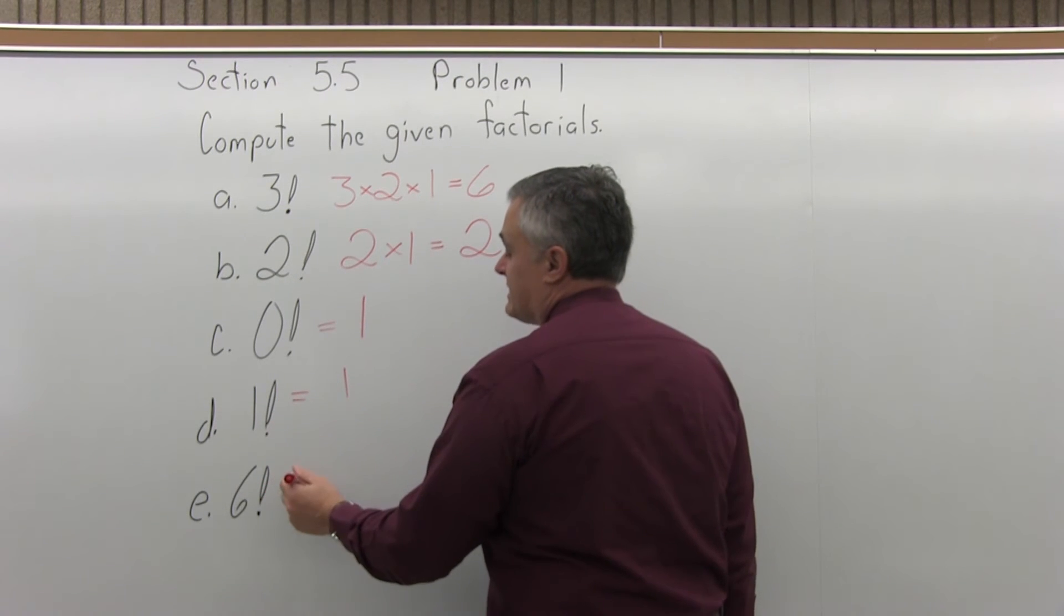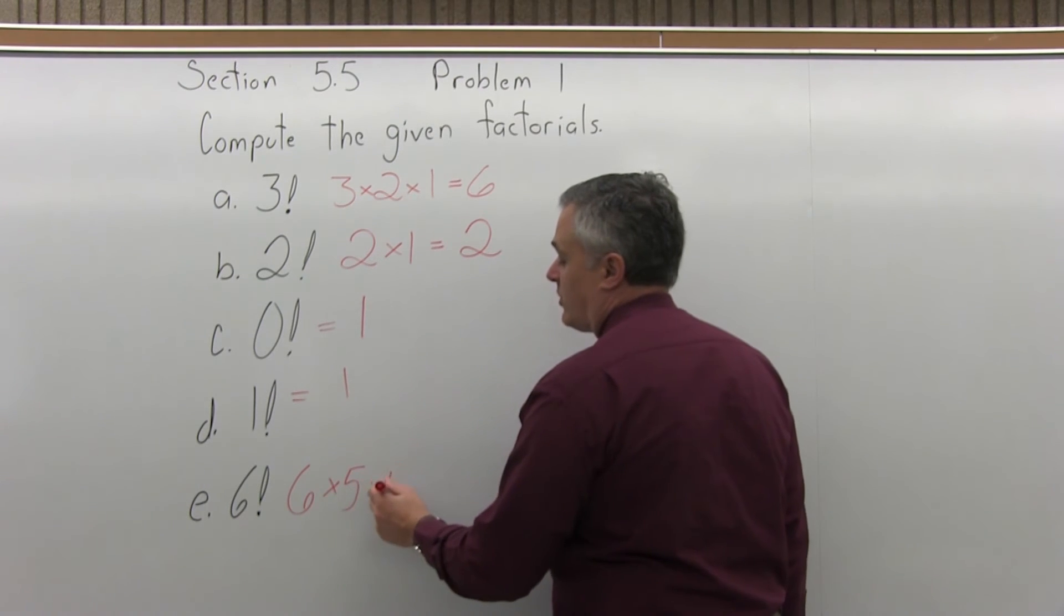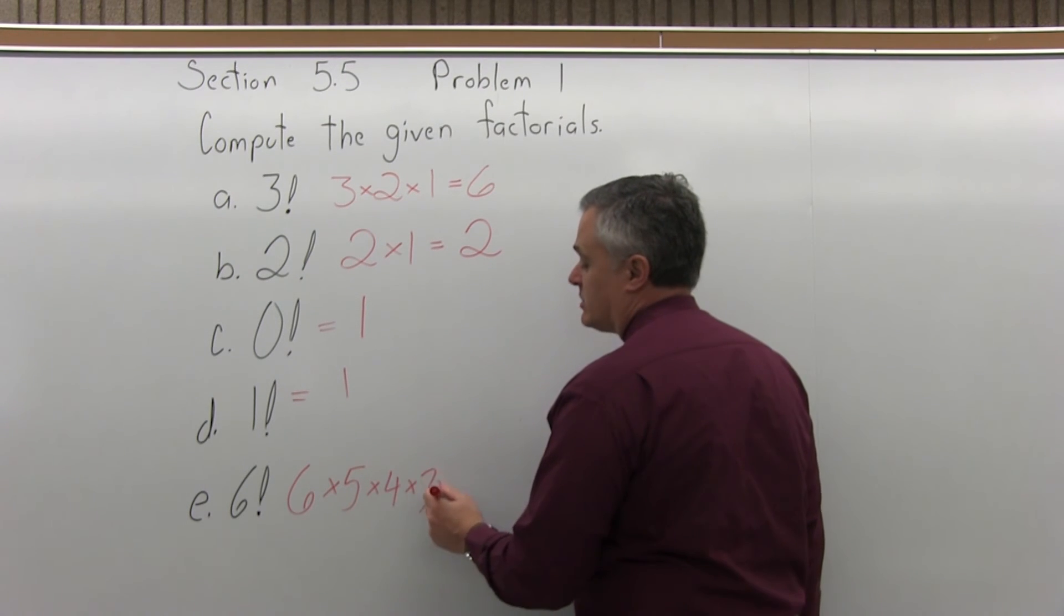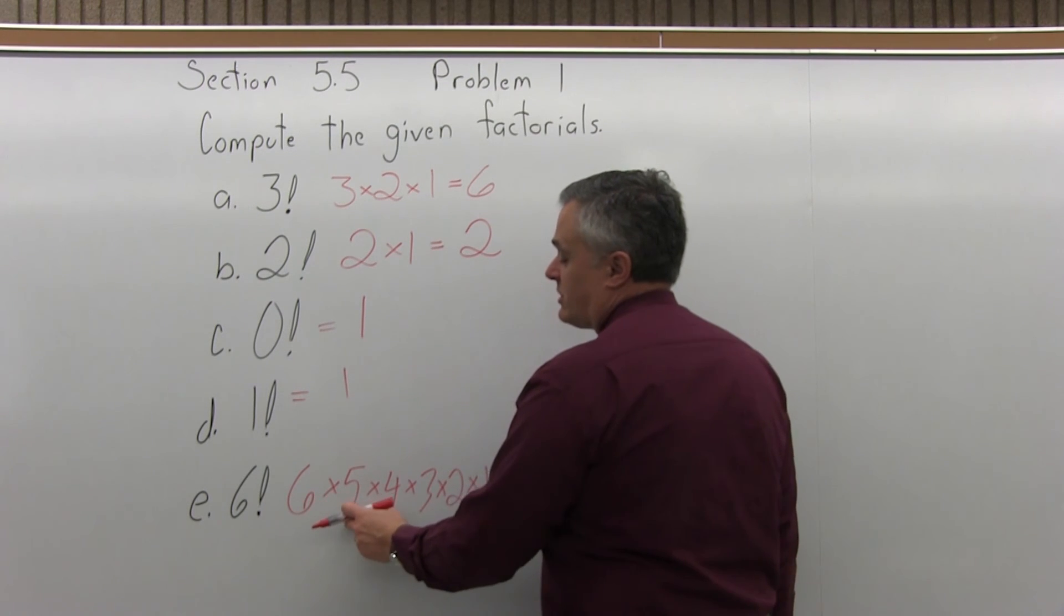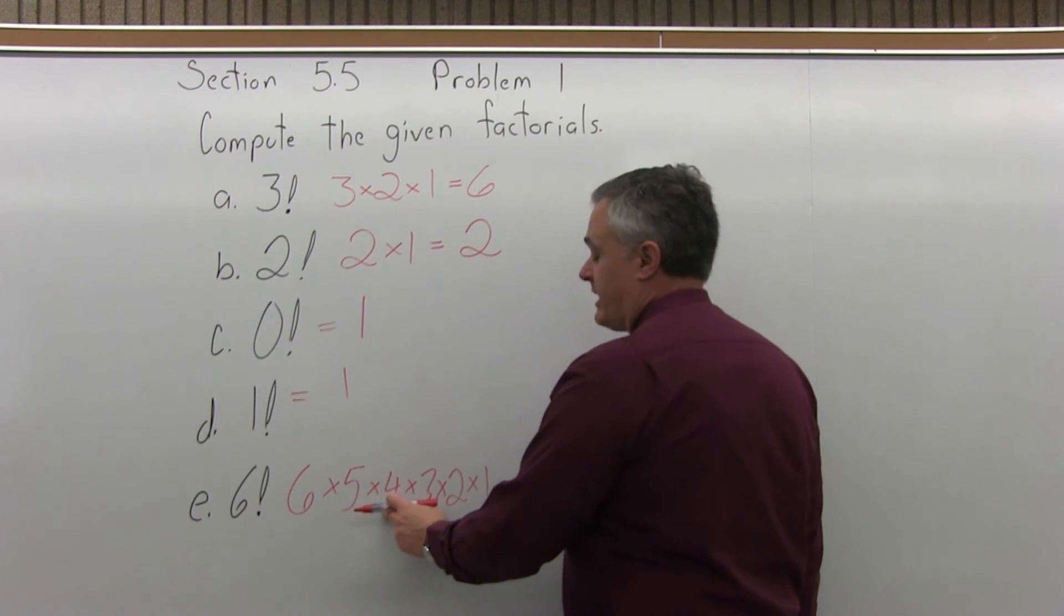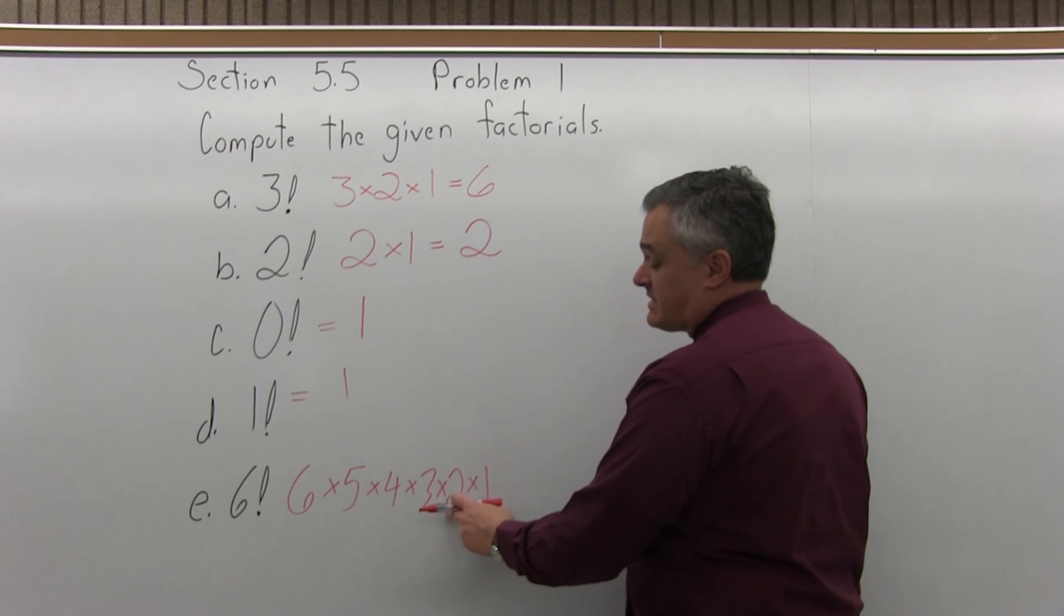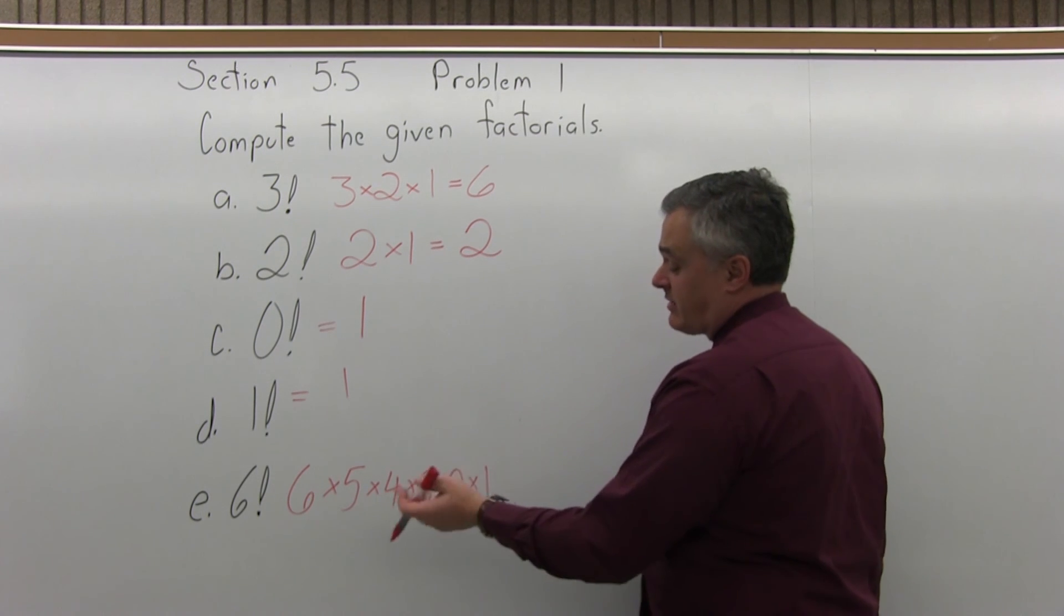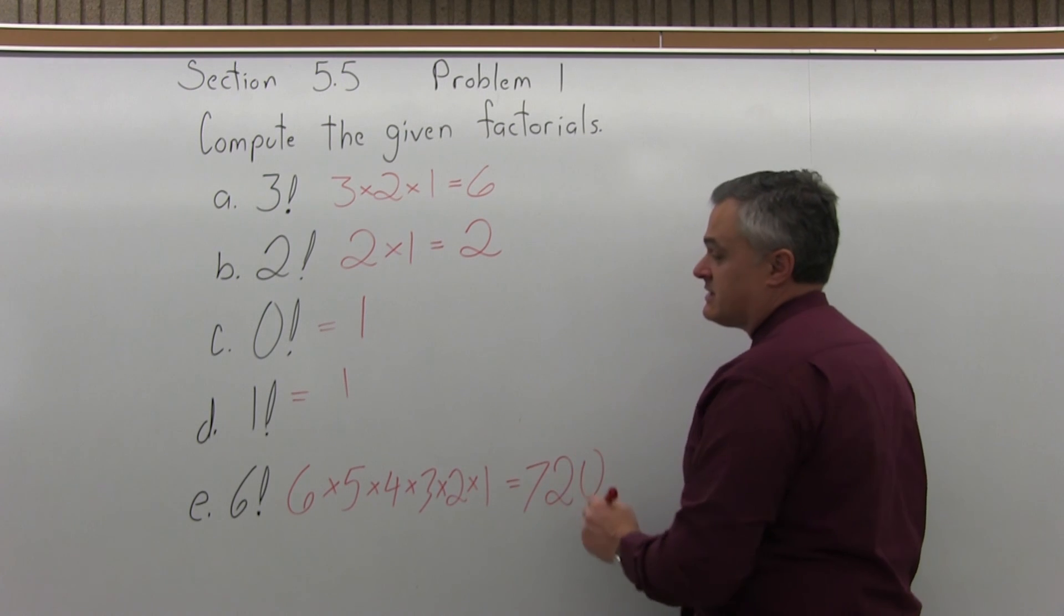And then finally 6 factorial would be 6 times 5 times 4 times 3 times 2 times 1. 6 times 5 is 30, 30 times 4 is 120, 120 times 3 is 360, 360 times 2 is 720, then times 1, of course, stays 720. So 6 factorial is 720.